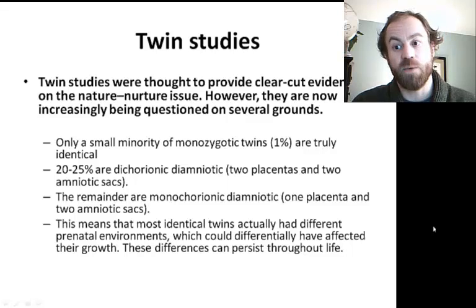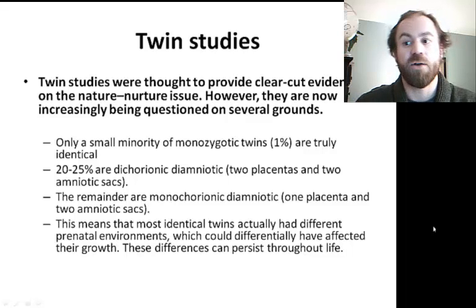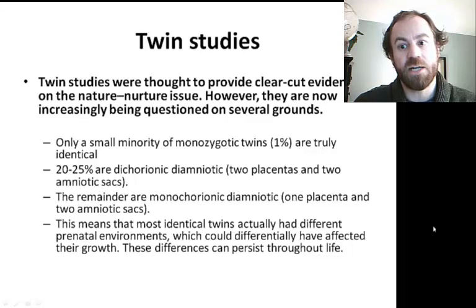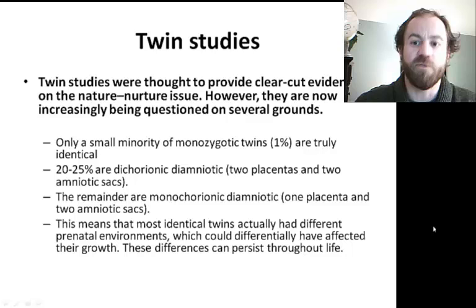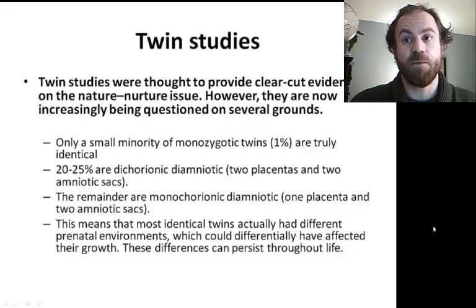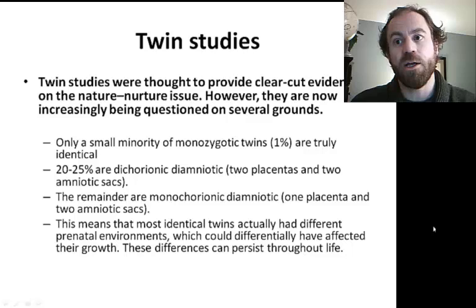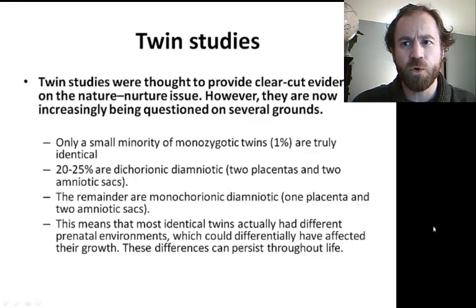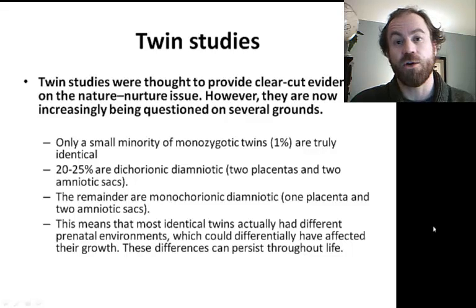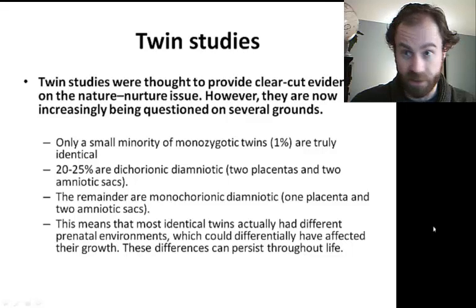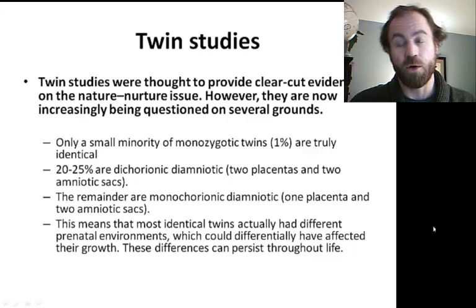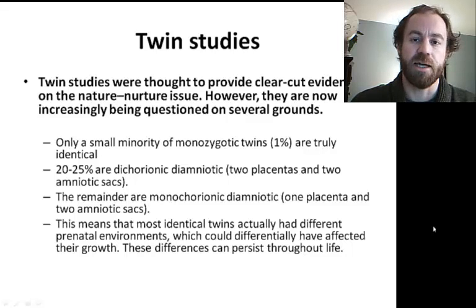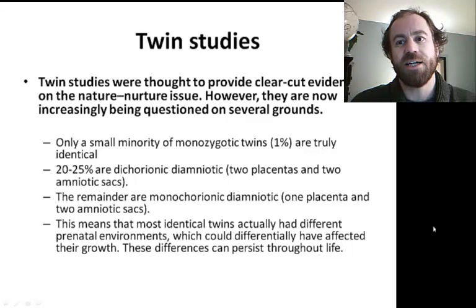Conversely, we can look at dizygotic twins who do not share DNA but who are the same age — thereby controlling for historic time — and are raised in the same environment. Since the age and environment are the same, any differences between them must be due to the difference in their DNA, heredity. There are some problems with this concept, though. We know that only a small minority of monozygotic twins are truly identical. About a quarter of them are dichorionic diamniotic — meaning two placentas, two amniotic sacks. The remainder are monochorionic diamniotic — one placenta, two amniotic sacks. This means that most identical twins actually had different prenatal environments, which could differentially have affected their growth, and these differences can persist through life.